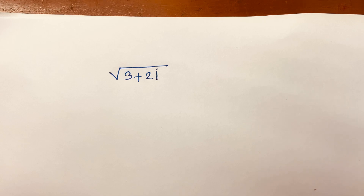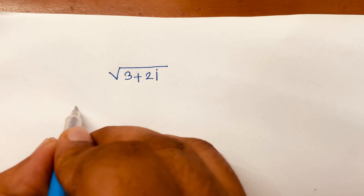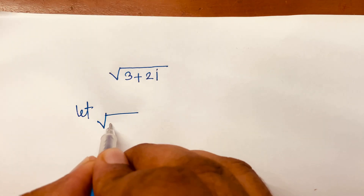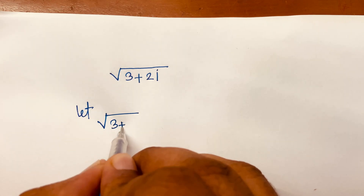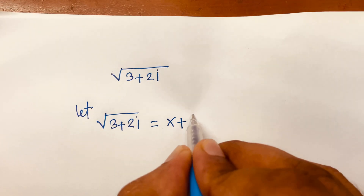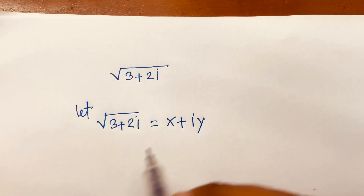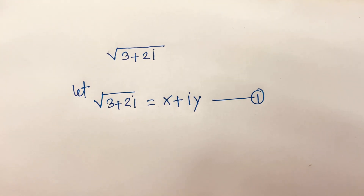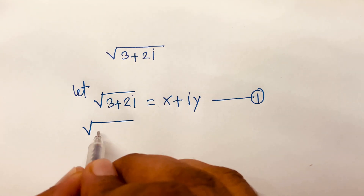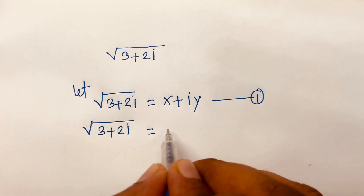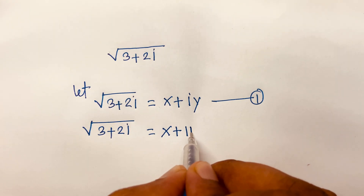How to solve square root of 3 plus 2i. First of all, let square root of 3 plus 2i equal to x plus iy. This is our first equation.